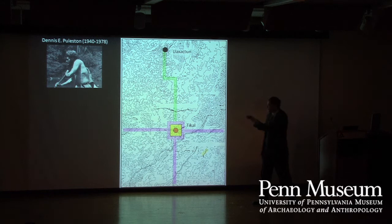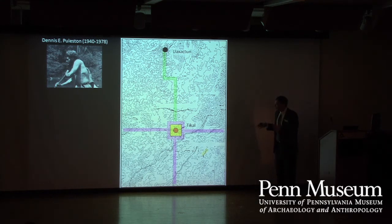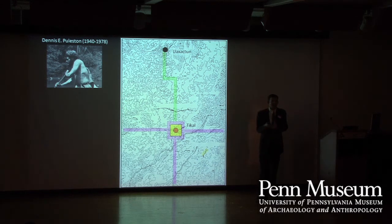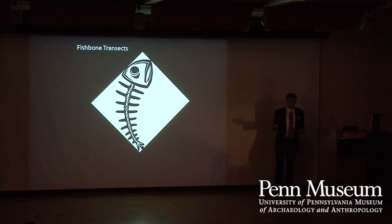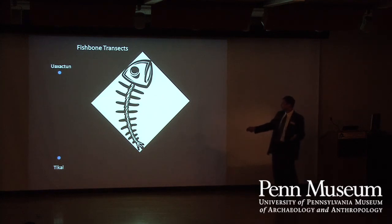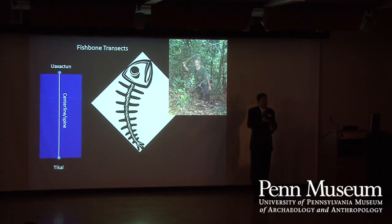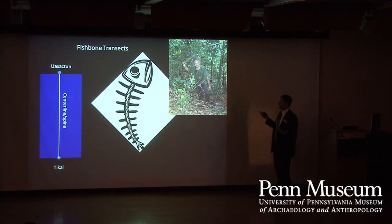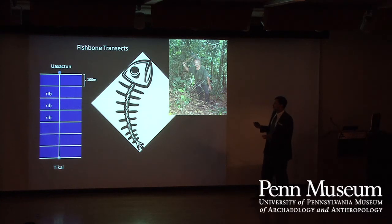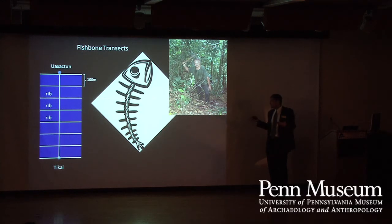Puleston's transect method from 1965–1966 set the standard for surveying in the jungle and scrub forest. They're called fishbone transects because when you look at them, they look like the skeleton of a fish. You begin by cutting a center line with your machete between two sites, then every 100 meters or so you cut what are called ribs, and you end up with the skeleton of a fish. To do the survey, you set up your four or five people and with a compass they walk the 100 meters to the next rib.